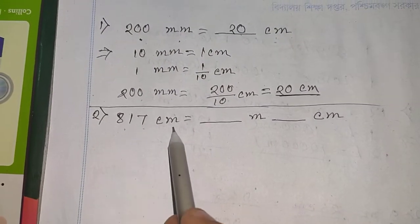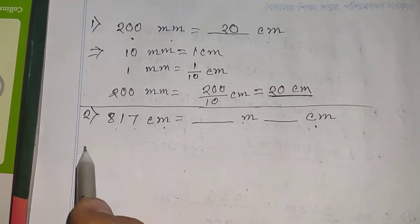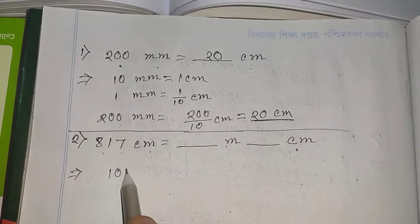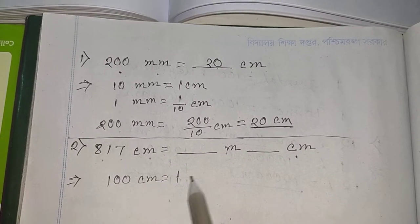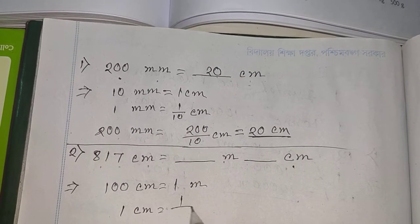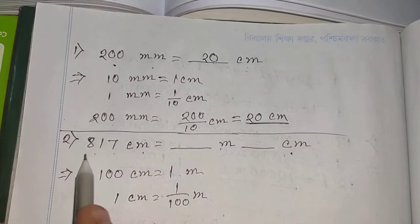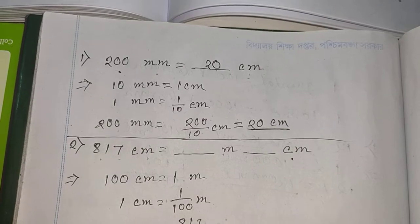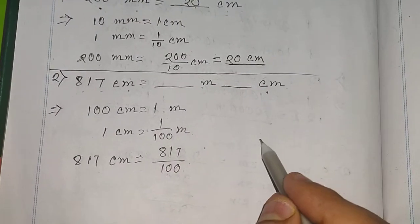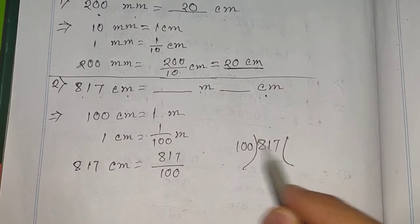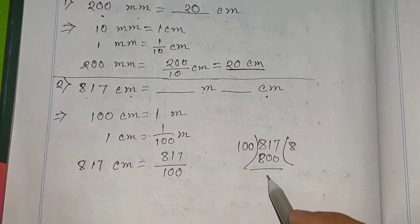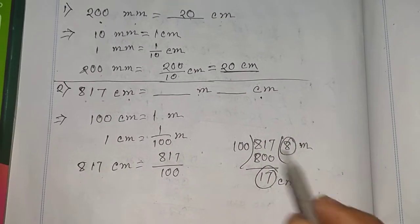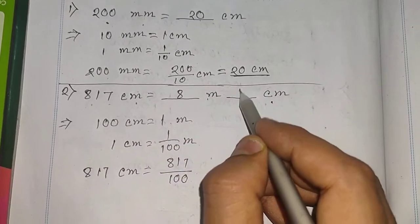Now convert 870 centimeters to meters and centimeters. We know 100 centimeters equals 1 meter, so 1 centimeter equals 1/100 meter. So 870 centimeters equals 870 divided by 100. Dividing: 8 is the quotient and 70 is the remainder, so the answer is 8 meters and 70 centimeters.